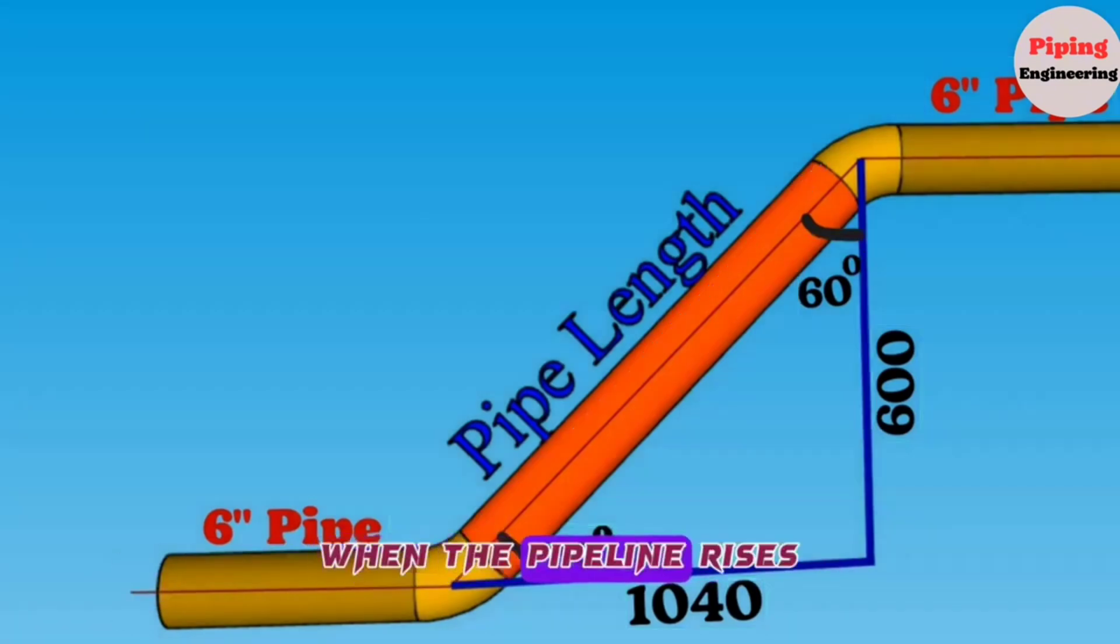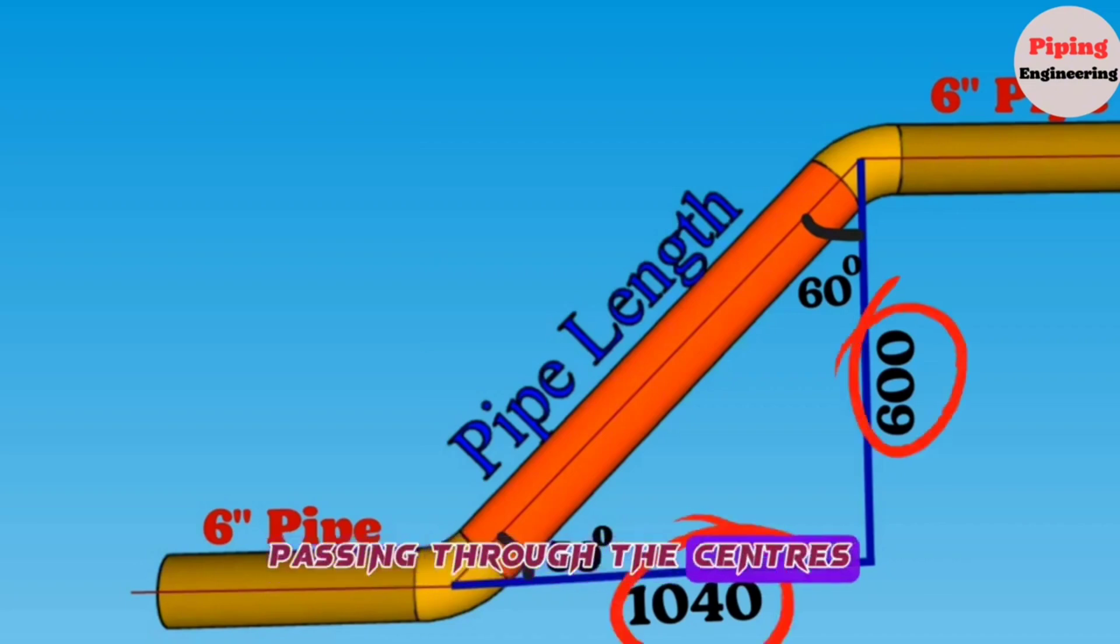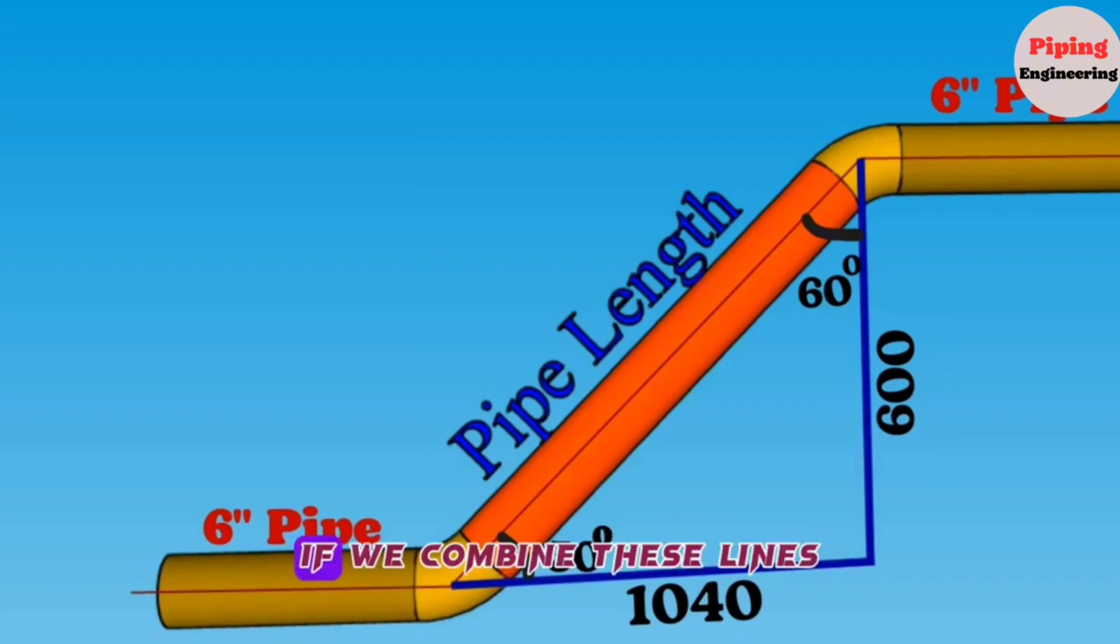When the pipeline rises at a 30-degree angle, it forms lines with lengths of 1040 and 600 millimeters passing through the centers of the elbows. If we combine these lines, a right-angle triangle will be created. The hypotenuse of this right-angle triangle is the distance between the elbows in the pipeline.